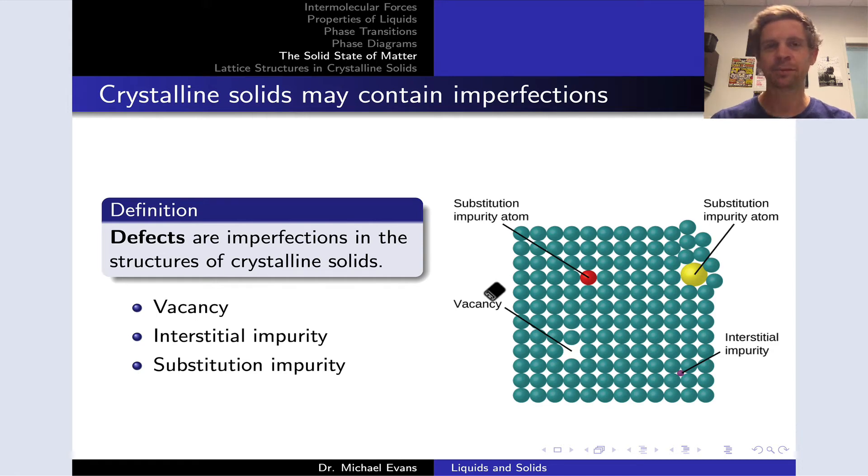The submicroscopic world of atoms and molecules is incredibly dirty. Even the purest of materials, something like a single crystal of silicon used in computer chips, still typically contains impurities. And these impurities can have an impact on the properties of materials.